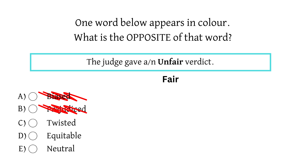Option C is twisted. Twisted suggests something is distorted or morally corrupt, which is also closely related to unfair as you're being corrupt, so we can eliminate option C. This leaves us with option D, equitable, meaning you're fair and impartial, and option E, neutral, which means you're not taking sides, which again implies fairness.